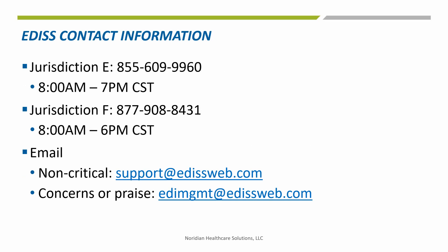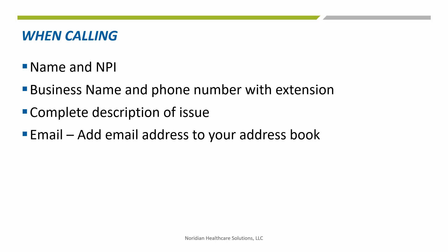This slide provides contact information as well as the hours that our EDI team is available, for both Jurisdiction E and Jurisdiction F. We also provide EDI's email addresses where you can contact them for claim or report information. To verify yourself when calling EDI, you will need your name and the NPI you are calling about, the business name, and your phone number with extension. You also need to provide a complete description of the issue, and make sure you add EDI's address to your address book so emails don't get routed to your spam folder.